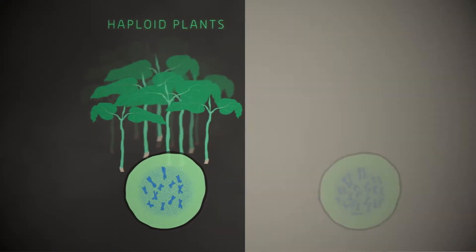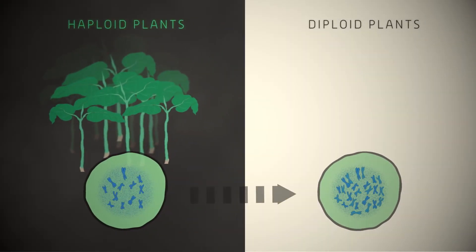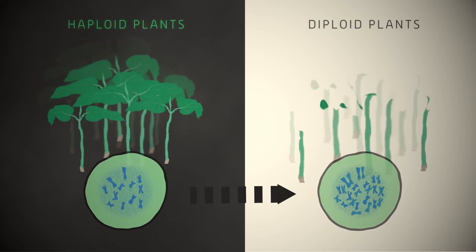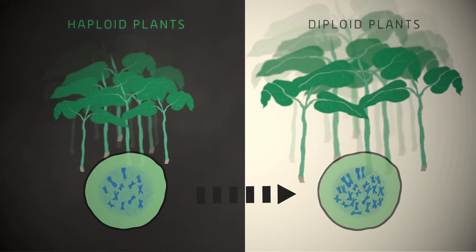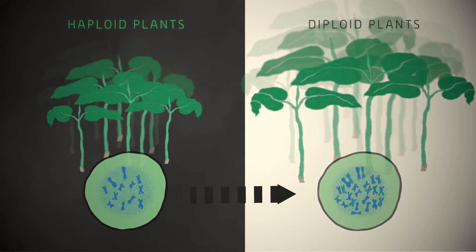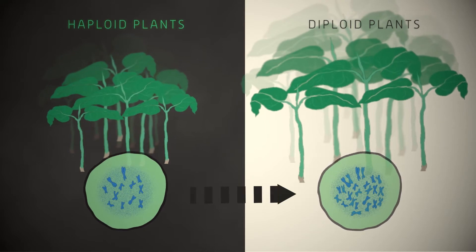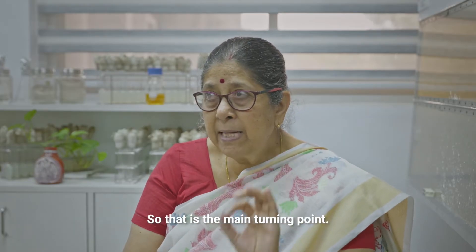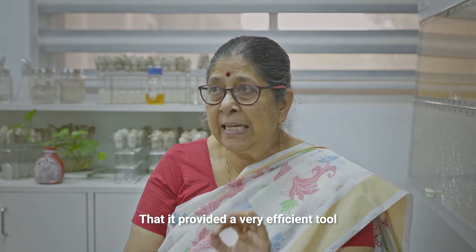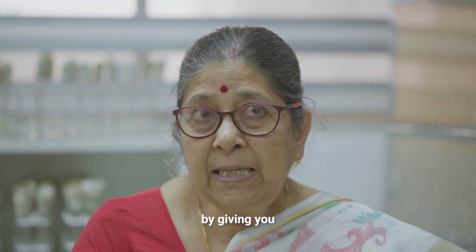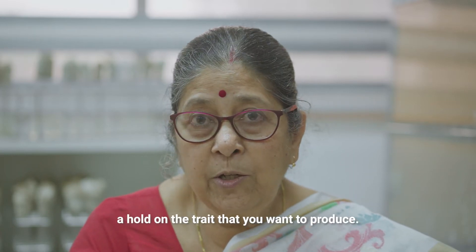The implications of this discovery were huge. Haploid plants have one set of chromosomes and are capable of carrying a desired trait. These can be converted into diploids to reproduce the same desired trait in future plants. That is the main turning point — it provided a very efficient tool for plant breeding, giving you a hold on the trait that you want.